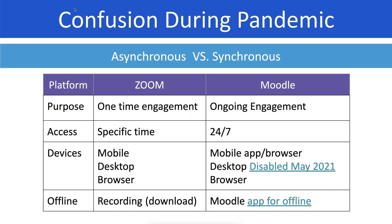That's why a learning management system is so powerful. Access to Zoom is at a specific time; access to Moodle is 24/7 — in the middle of the night, in the morning, in the afternoon. For devices: Zoom supports mobile, desktop and browser. For Moodle, you can use a Moodle app or Moodle in a browser, or up to 2021 you could use the desktop and browser. For offline: Zoom has the recording, and Moodle has the app for offline use.